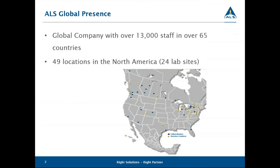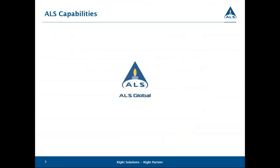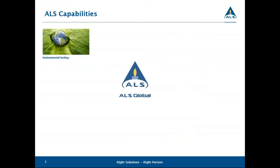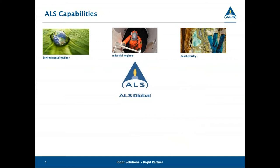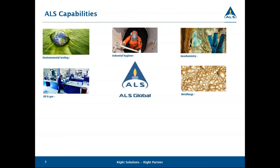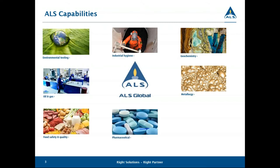We've been around since the early 80s. We are an international analytical services laboratory that serves a variety of different industries. We have a presence in over 65 countries and employ approximately 13,000 people worldwide. In North America alone, we maintain 49 sites — 24 of those are actual lab sites that serve different industries, while the remaining sites are service centers strategically placed throughout the different time zones. Our international corporate headquarters is based out of Houston, Texas.